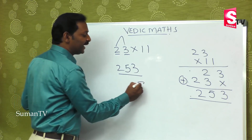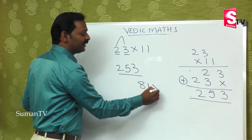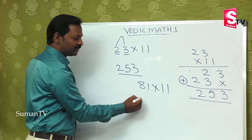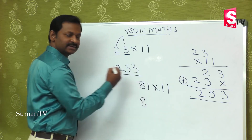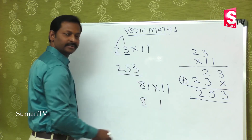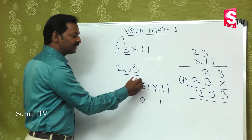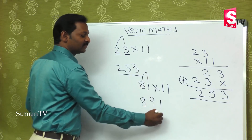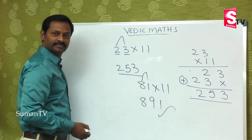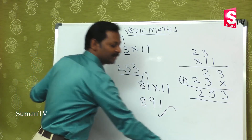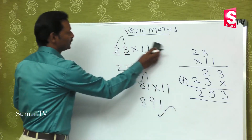Let's look at 81 into 11. What do you do? First number is 8, last number is 1. In between, 8+1=9. That's it — the answer is 891. Is it simple? Now give me back the answers.